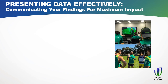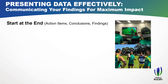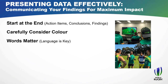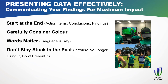A great book, Presenting Data Effectively, comes up with five ways to communicate your findings for maximum impact. First, start at the end — what are the action items, conclusions, findings and implications of the information you're trying to get across? Carefully consider your colour — it has a big difference in making sure people can take in the information. We've all seen yellow text on a green background where you can't see what's going on. Language is key — that emotive language like Paul Gustard's suffocate, strangle and squeeze, or for us: united, unrelenting and clinical. Find words that resonate. And don't stay stuck in the past — if you're no longer using something, don't present it.